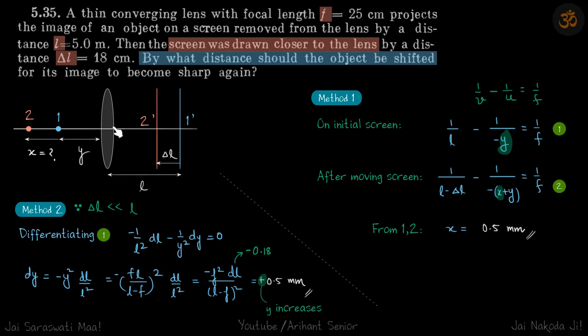By distance delta l, this distance is delta l. By what distance should the object be shifted for its image to become sharp again? So one thing is, should the object be shifted towards left or towards right?